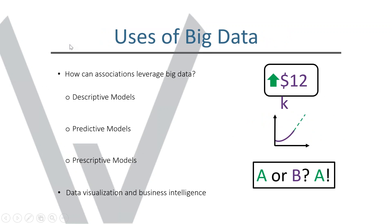There are three uses of big data models. Descriptive models tell you what has happened — collecting data in one place to describe recent reality. A simple example: being able to say your revenue increased by $12,000. Predictive models are the next step — the ability to make projections about what's going to happen in the future. You might plot your revenue over time and then project a trend line into the future.